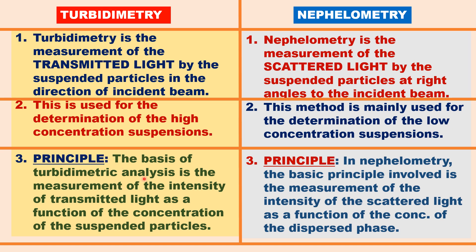The principle is the same. The basis of turbidimetry analysis is the measurement of the intensity of transmitted light as a function of concentration of suspended particles in solution or in air — we can measure air pollution, water pollution, etc. In nephelometry, the basic principle is the measurement of the intensity of scattered light as a function of concentration of the dispersed phase.